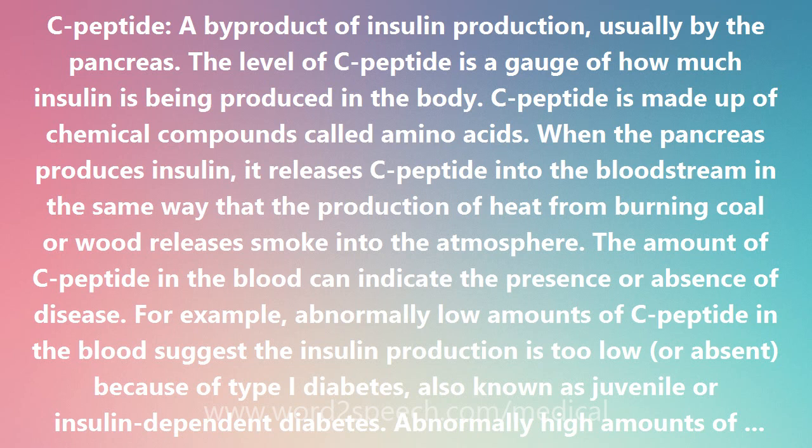For example, abnormally low amounts of C-peptide in the blood suggest the insulin production is too low, or absent, because of type 1 diabetes, also known as juvenile or insulin-dependent diabetes. Abnormally high amounts of C-peptide warn of the possible presence of a tumor called an insulinoma that secretes insulin. Normal levels of C-peptide may signal that all is well.